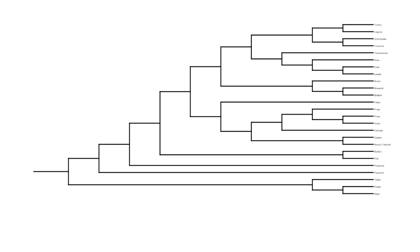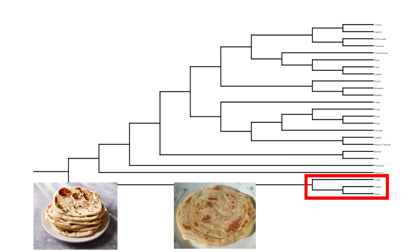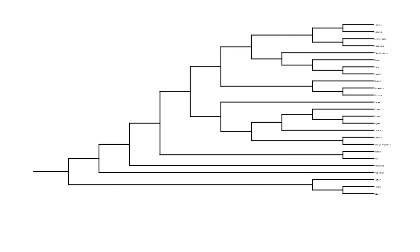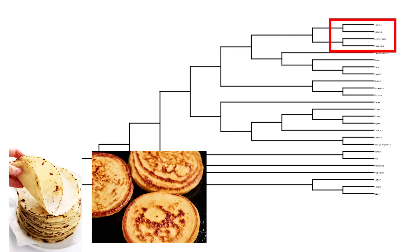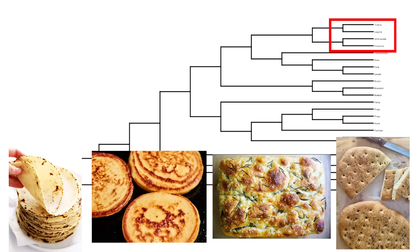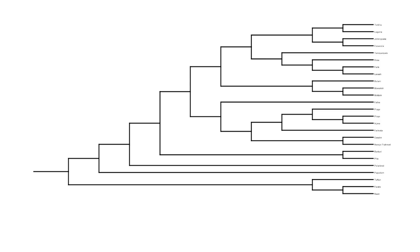So you can get this phylogeny, where naan, ferrata, and taftan are the first earliest-branching flatbreads, and then you get a couple of others, and then all the way at the very late-diverging end you get tortillas, johnnycake, focaccia, and lagana. So there's this large complex of them — but that's just one test.